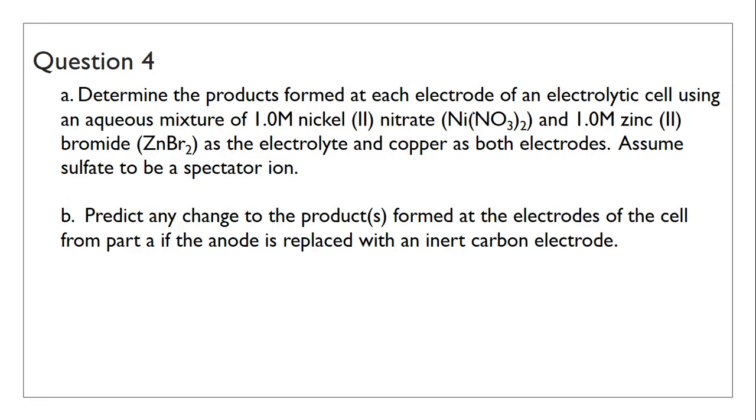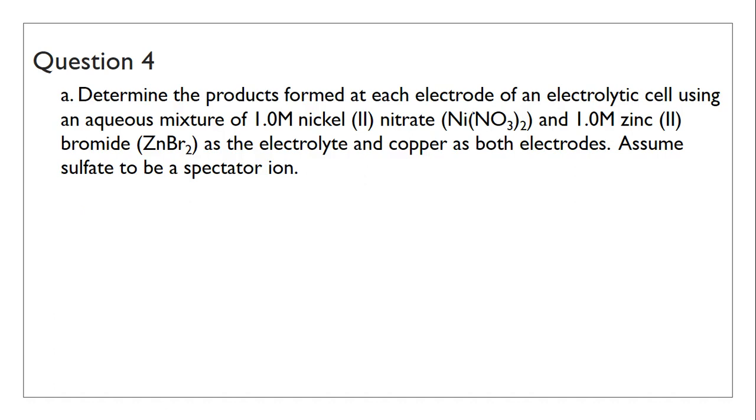We only have two questions here. I'm going to start with 4a, which is to determine the products from each electrode of electrolytic cells. Your electrolyte is an aqueous mixture of nickel nitrate and zinc bromide. It's still SLC because the concentration is 1.0M. The electrodes are no longer inert, they are now made of copper.